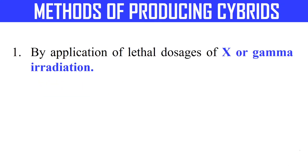Now how can we produce these cybrids? The general principle is to deactivate, kill, or remove the nucleus of one parent so that after hybridization the hybrid cell will contain the nucleus of only one parent.